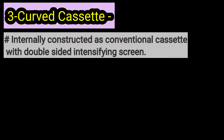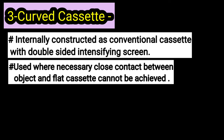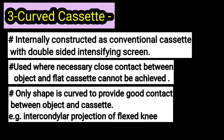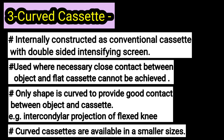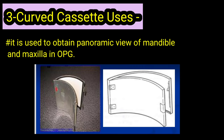This is the curved cassette. The curved cassette is designed as a double screen X-ray cassette — only its shape is curved. Curved cassettes are used where the object or flat cassette cannot make close contact, for example in the intercondylar projection of a flexed knee. They are available in smaller sizes and are used to take a panoramic view in an OPG scan.